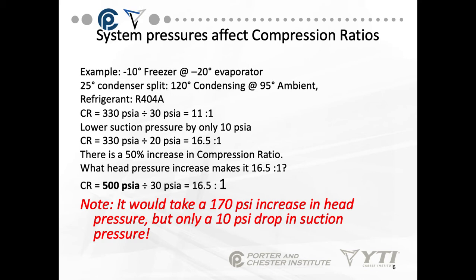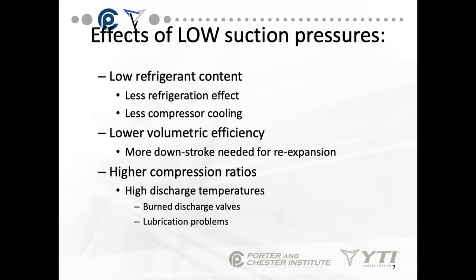If we increase head pressure — for instance from a dirty condenser — while maintaining evaporator pressure, the compression ratio also goes to 16.5 to 1. It would take a 170-degree increase in head pressure, versus only a 10 PSI drop in suction pressure to achieve the same result. So we'd have either an extremely dirty or hot outdoor environment, or ice building up on the evaporator. Very little difference in evaporator temperatures will cause a pressure drop and reduce suction pressure.